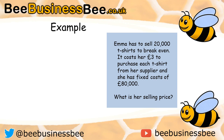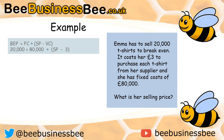Now we can do a more complex rearrangement, because we have to do something called multiplying out the brackets. I'll explain how and why we do that with this example. Emma has to sell 20,000 t-shirts to break even. It costs her £3 to purchase each t-shirt from her supplier and she has fixed costs of £80,000. What would be her selling price? We write out the information we've got: breakeven point is 20,000, fixed costs are £80,000. We don't know the selling price — we'll leave that as SP — but we do know the variable cost is £3.